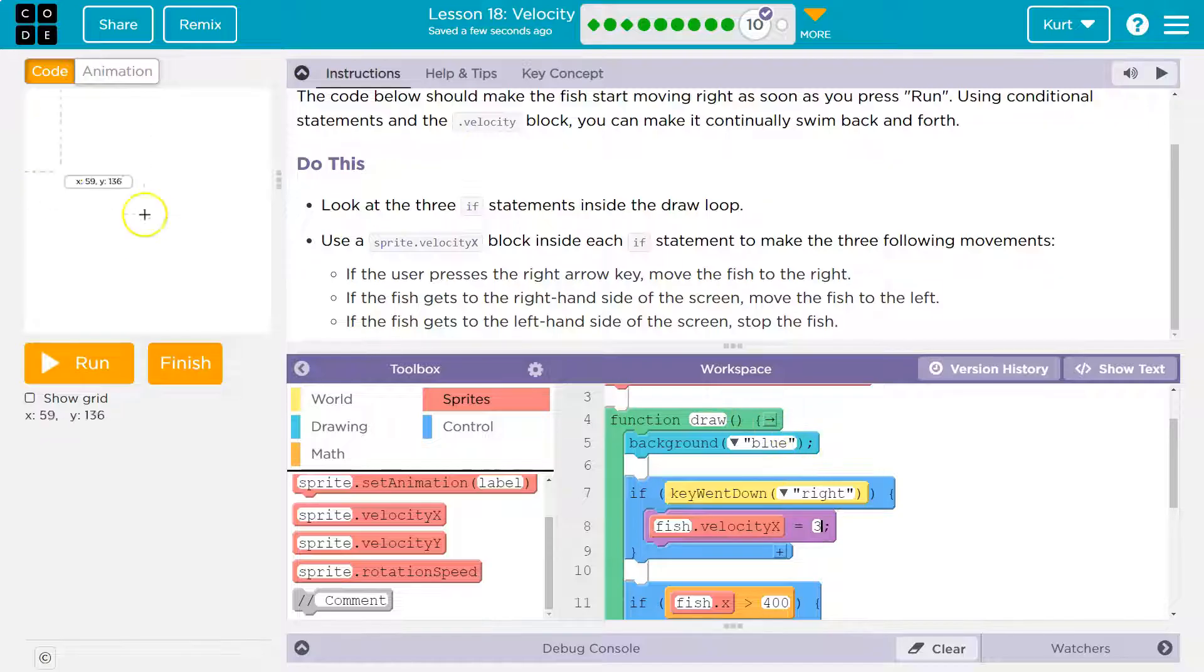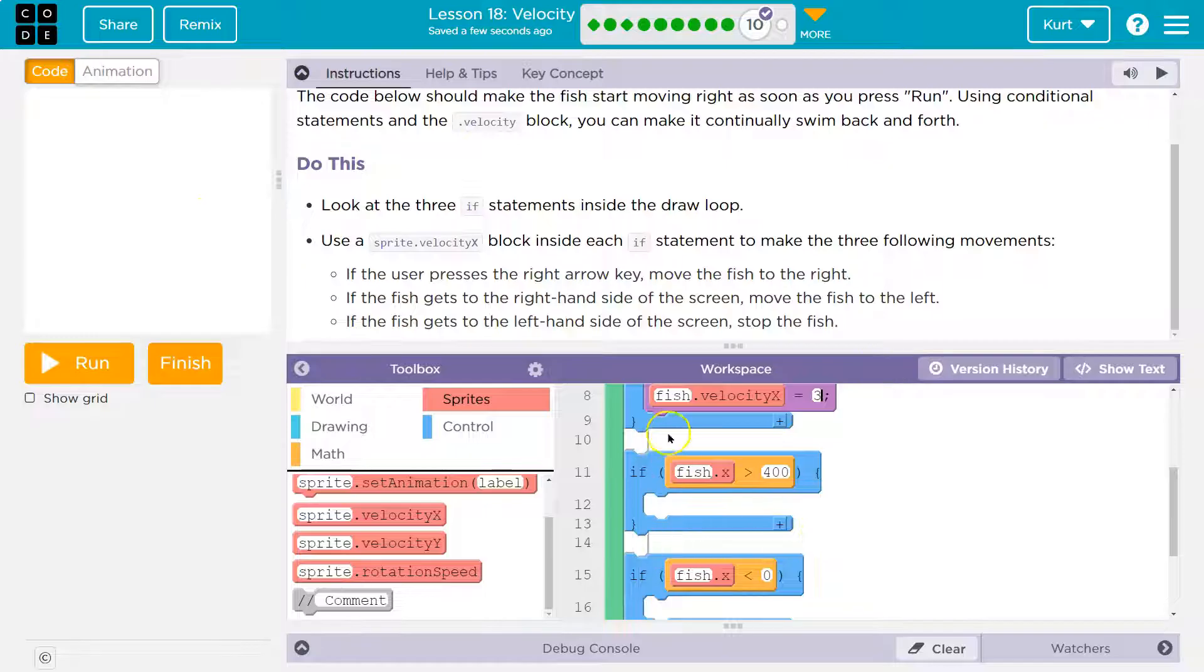Every time the draw loop runs, it wipes out the screen with a blue background and makes it look like the fish is moving because it goes 30 times a second. It redraws itself.